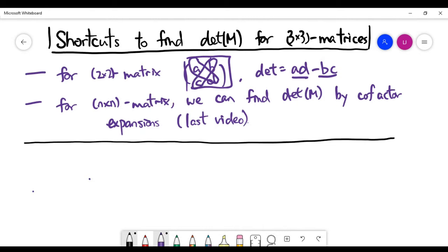But in general, for a square matrix of bigger size, like n by n, we are able to find the determinant only by the general formula, which is called the cofactor expansion.